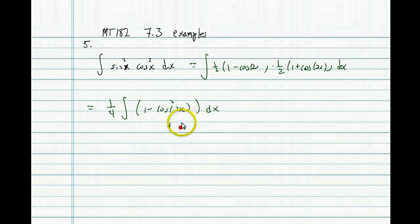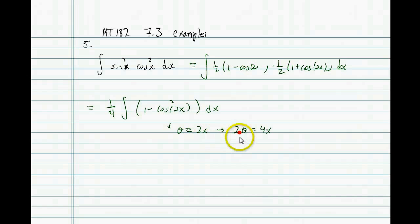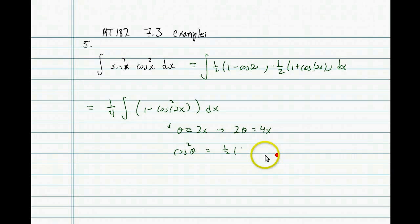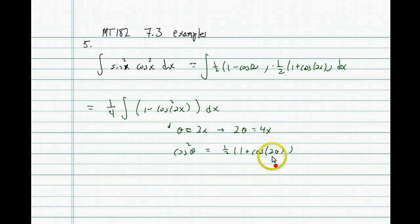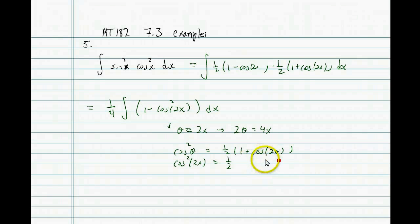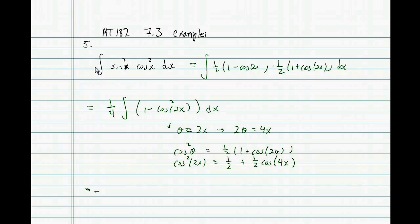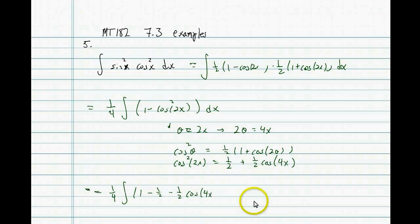Now we're in a similar position: we've got a power of cosine we want to reduce. Thinking of theta as 2x, two times theta is 4x. Repeatedly applying the identity, cosine squared of theta equals one-half times one plus cosine of twice that angle. So cosine squared of 2x on the left becomes cosine of 4x to the first power on the right.